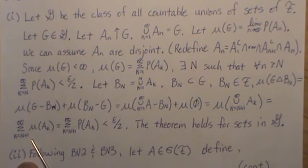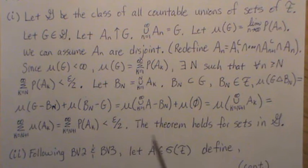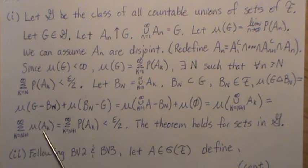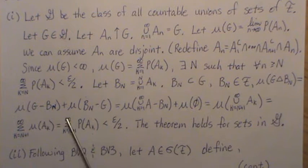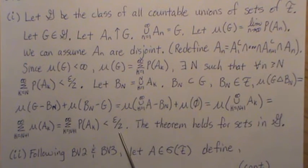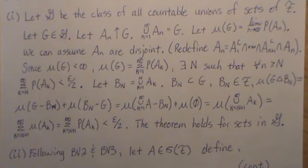But that's equal to the sum of these measures because these are all disjoint sets. Since each A_k is in the field, that's equal to P(A_k). But we've by definition set that less than or equal to epsilon over 2. So the theorem holds for sets in script G.